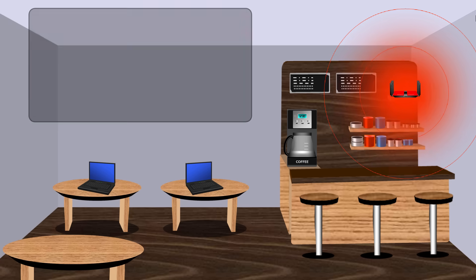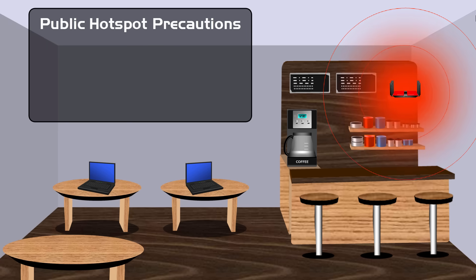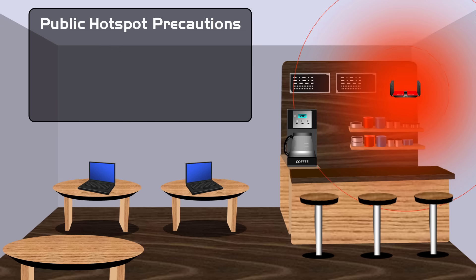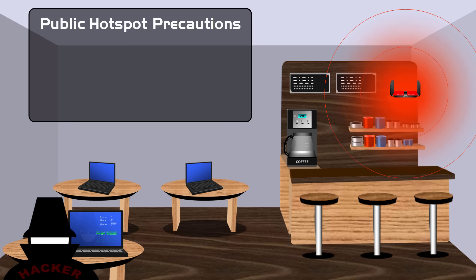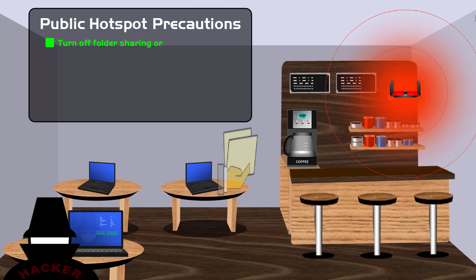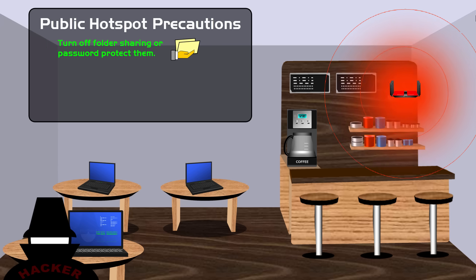Going back to public hotspots, there are some security concerns when dealing with them, because they are in fact public, which means that just about anyone can connect to them. You're going to be sharing that connection with other people, which could include hackers. So if you're going to connect to a public hotspot, you should take certain precautions — for example, if you have any folders that are shared, you should turn off folder sharing or at least password protect your shared folders.